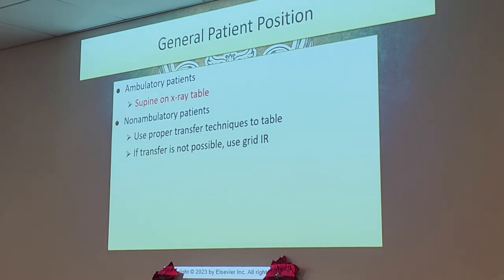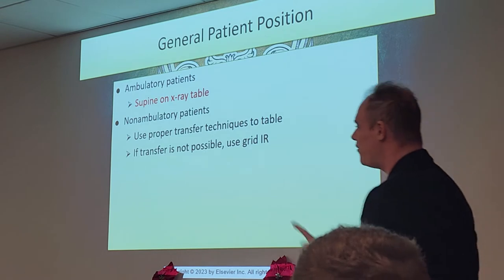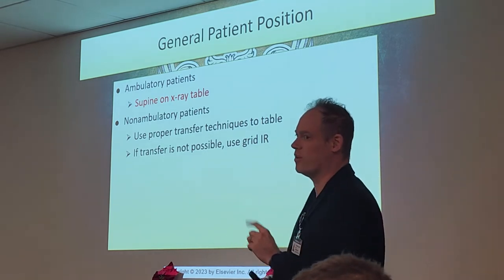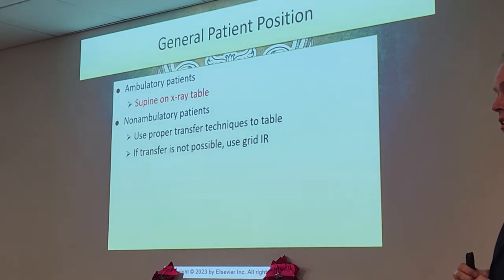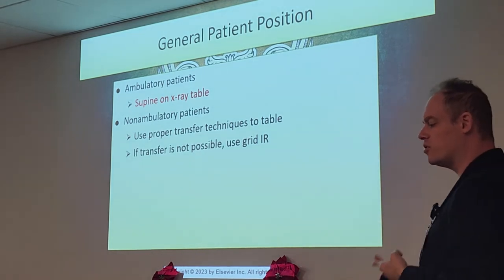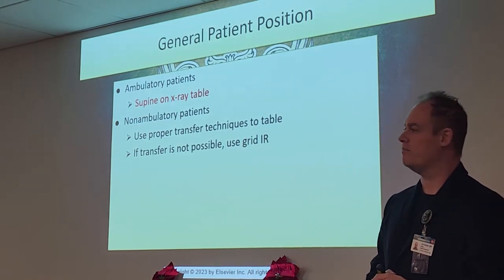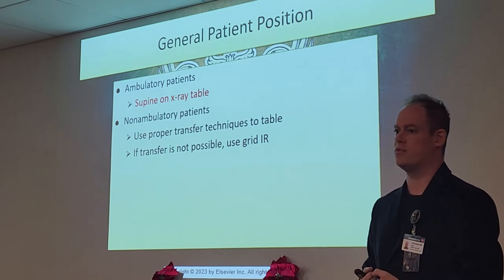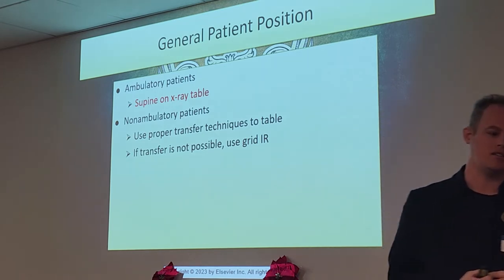If you don't use a grid, what does your image suffer from? Spatial resolution is compromised — it gets very noisy, not foggy, but noisy. That's a registry question and a really important concept. Low spatial resolution equals noise or pixelation on the image, and we mitigate that by using a grid. It gives a smoother, higher spatial resolution, better-looking image.